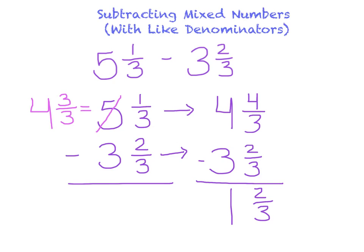Lastly, we need to check to see if our number can be simplified. 1 and 2/3 is already in the simplest form. So the answer to this problem is 1 and 2/3. And now you know how to subtract mixed numbers.